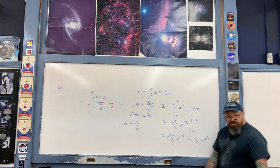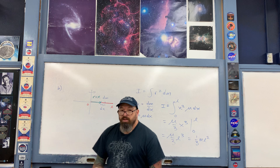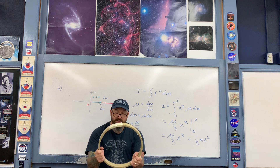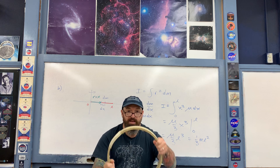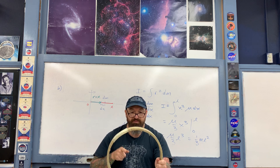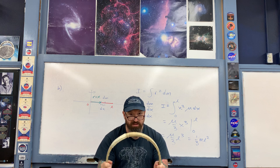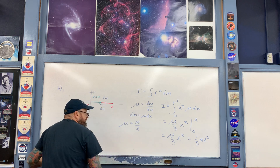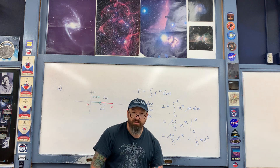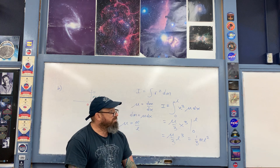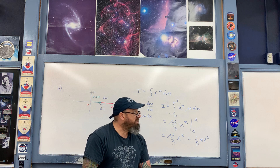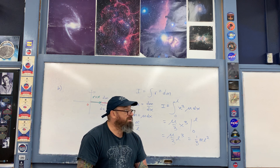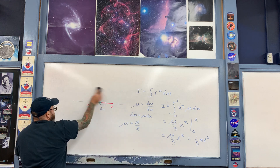The next situation to examine is the hoop. Imagine taking the one-dimensional stick and arranging it into a circle. We'll rotate it about an axis that is passing through the center of mass, perpendicular to the plane of the hoop. The hoop has mass m and radius R, and once again has linear density mu. Find the rotational inertia where the axis of rotation passes through the center of mass perpendicular to the plane of the hoop.